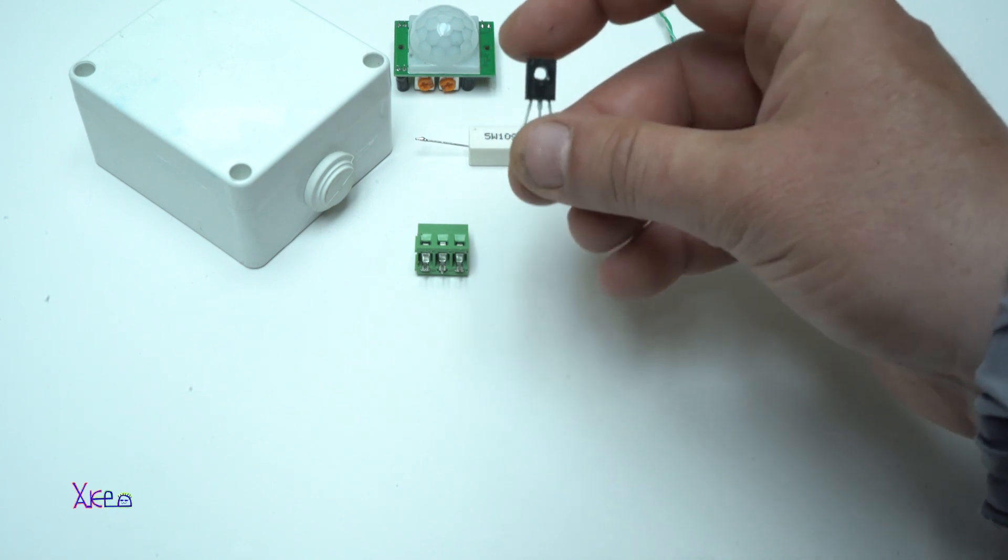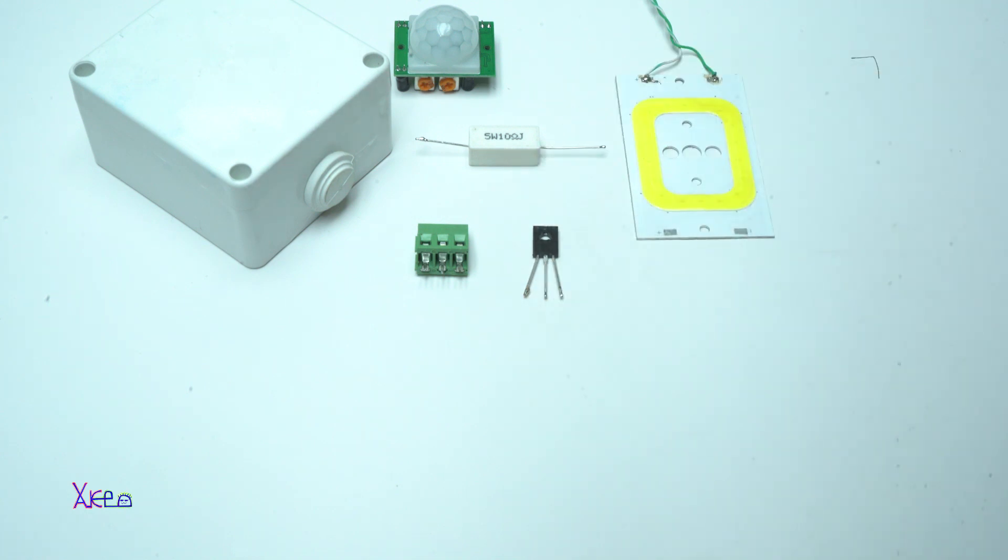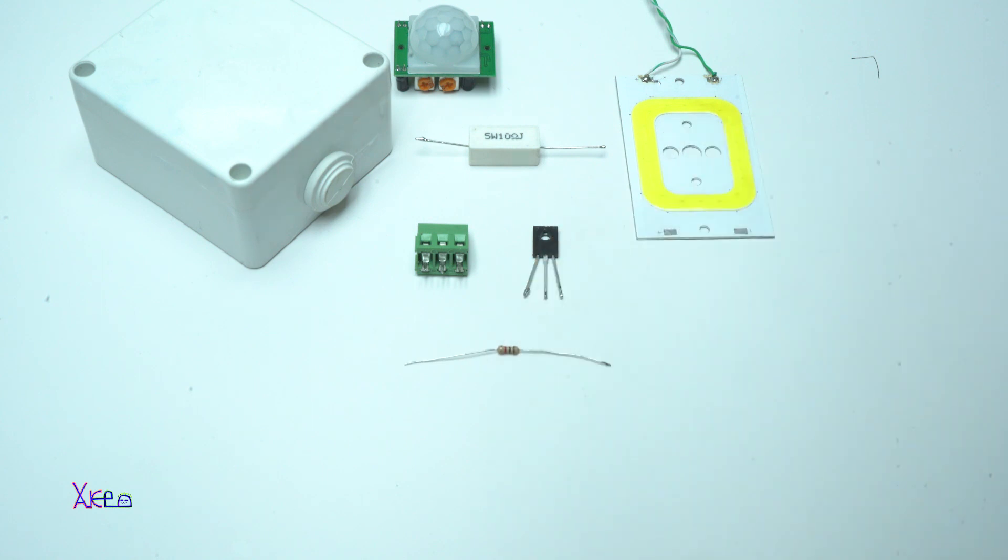Transistor BD439, an NPN transistor that can handle up to four amps with a heatsink. One resistor, one kilo ohm, and the schematic.